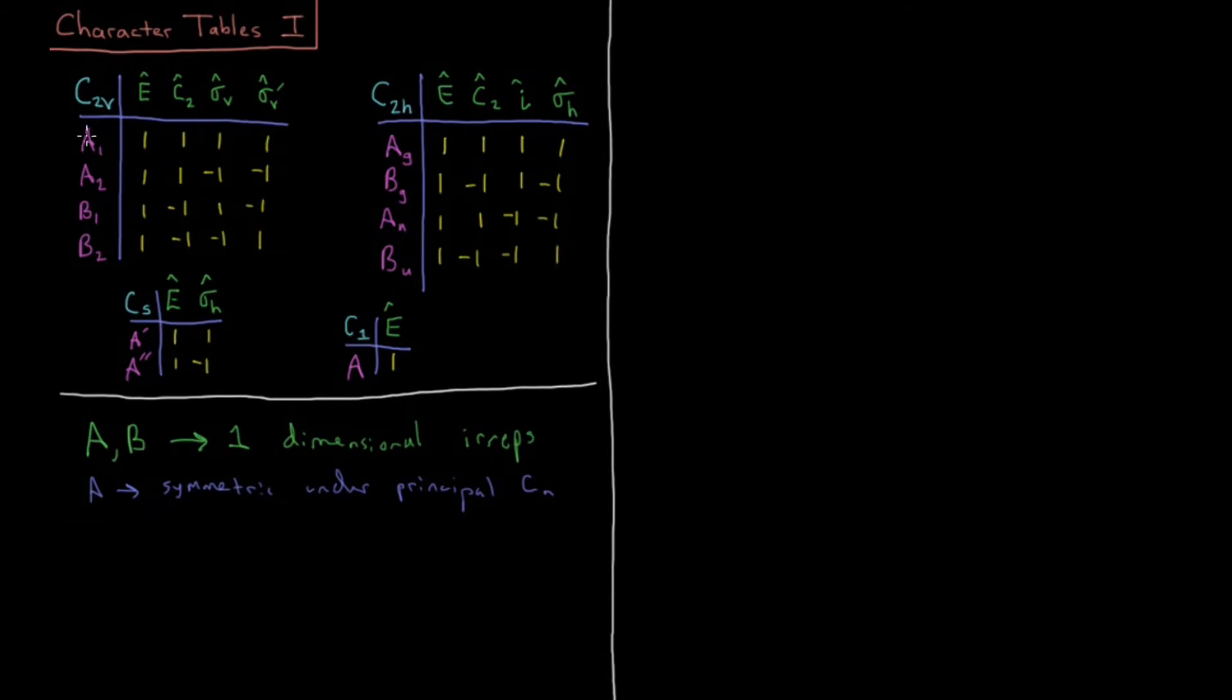The distinction between A and B is that A is symmetric under rotation of the principal axis. So an A irreducible representation is symmetric with respect to the principal axis Cn. So let's look here. A1 and A2 of C2v, they have a 1 with respect to C2, and AG and AU for C2H both have a 1 with respect to C2.